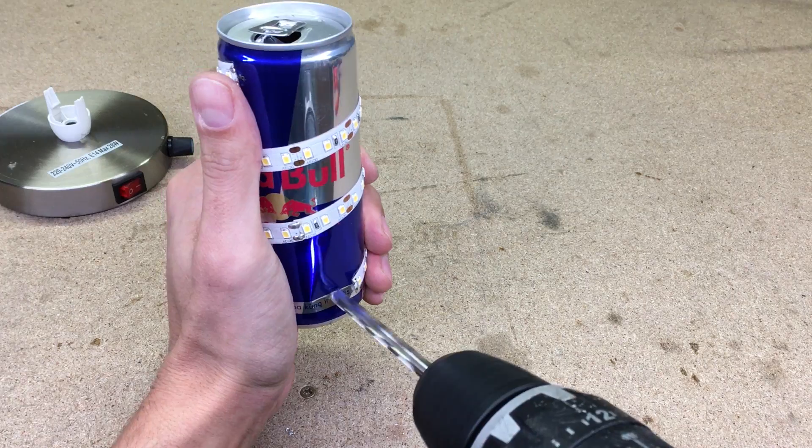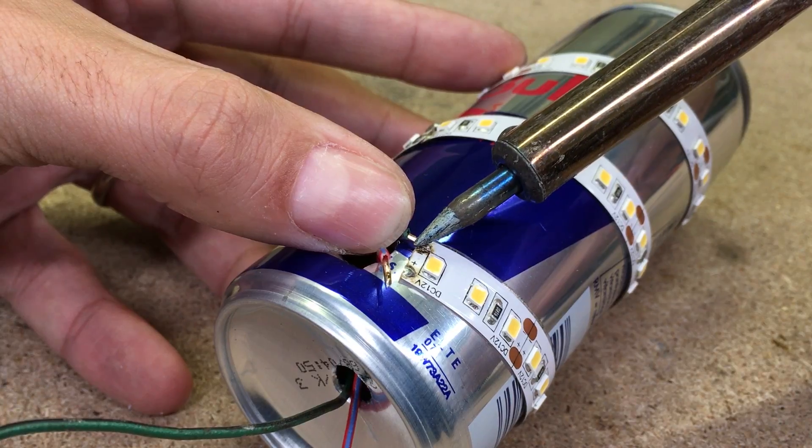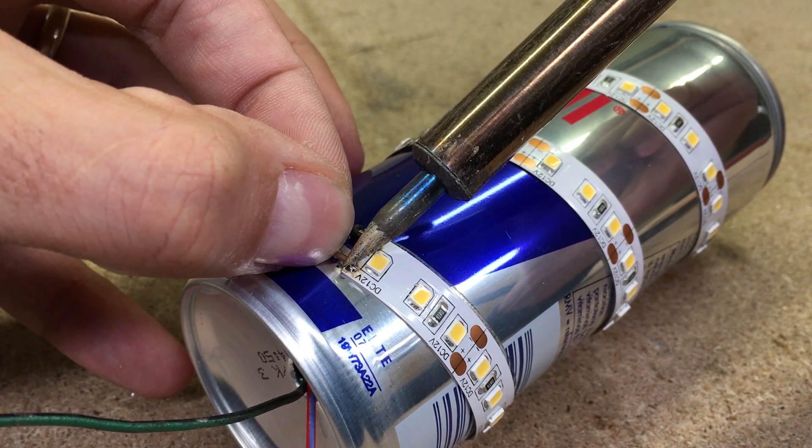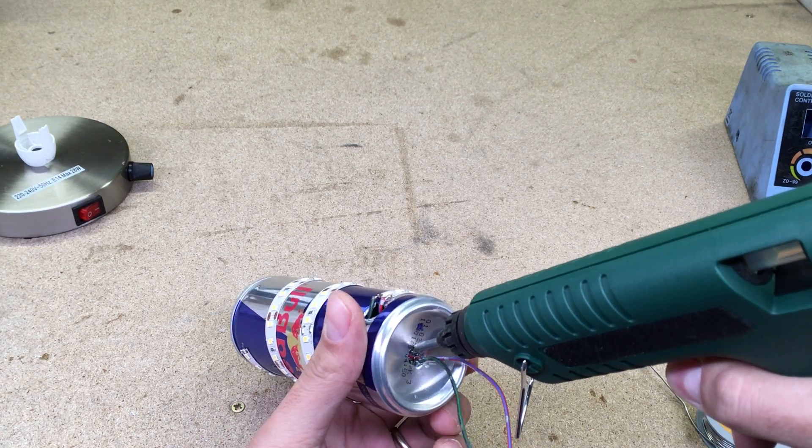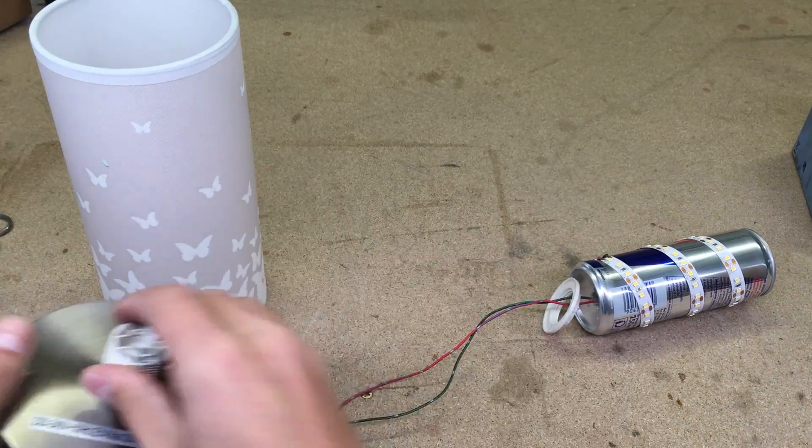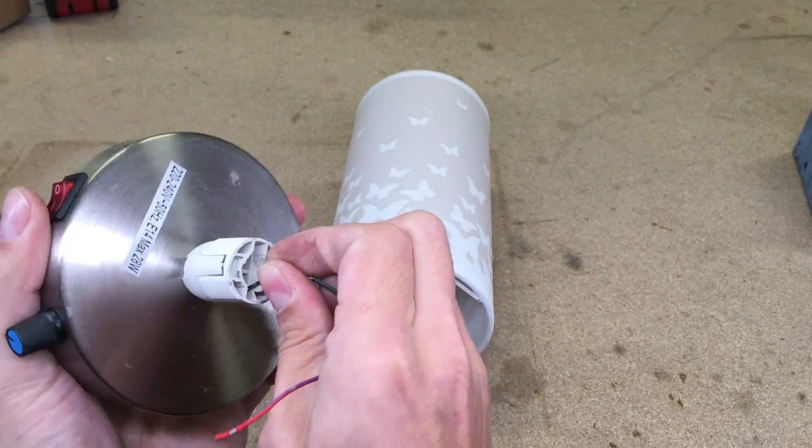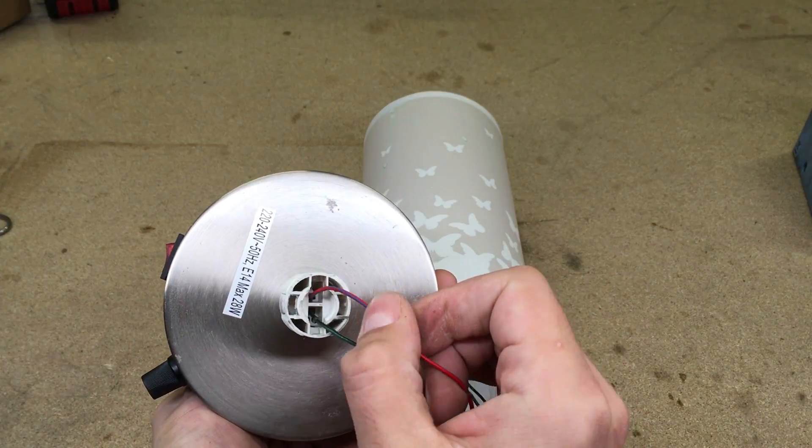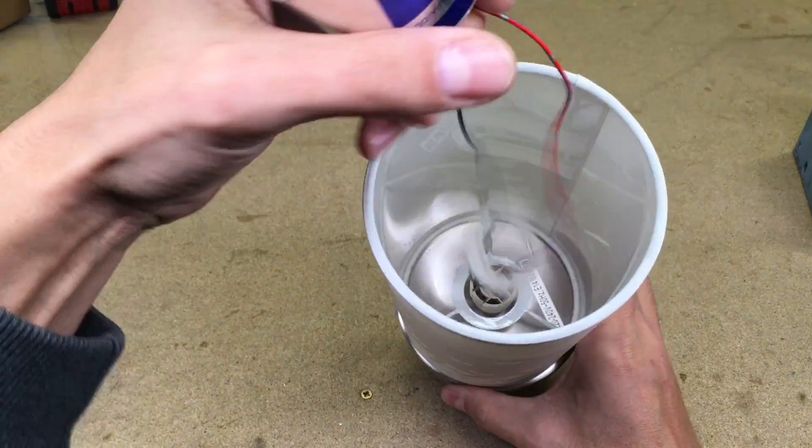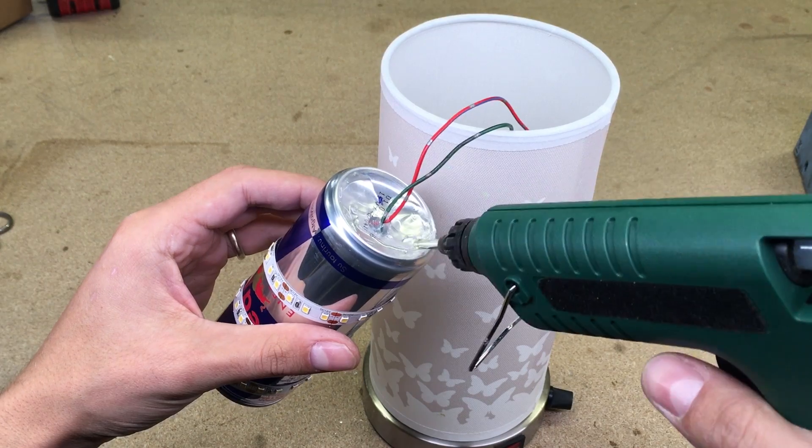Drill two holes in a can for wires and solder a LED strip. Use hot glue to fix them in place. And it's time to assemble everything back. With hot glue, glue the can in a needed place.